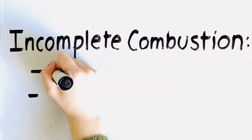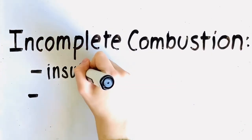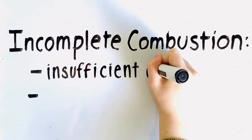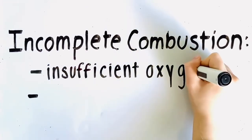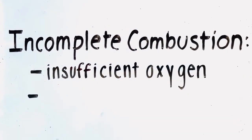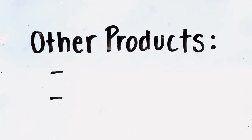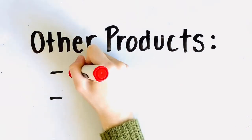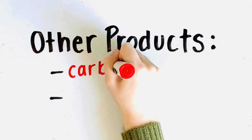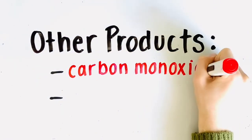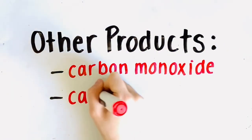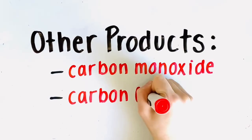Secondly, we have incomplete combustion. This occurs when an insufficient amount of oxygen is present. A yellow flame color indicates an incomplete combustion reaction. The products are not just carbon dioxide and water vapor — it can also produce carbon monoxide and carbon, also known as soot. Soot is hazardous when inhaled.